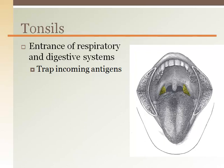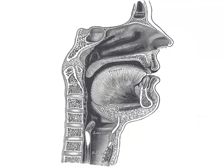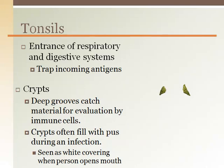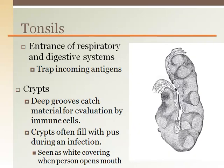The tonsils are clusters of lymphatic tissue found at the entrance of the respiratory and digestive systems — the nose and mouth. Their purpose is to trap, identify, and destroy any incoming antigens. There are three pairs of tonsils: the pharyngeal tonsils in the back of the nasal cavity, the palatine tonsils seen in the back of the throat, and the lingual tonsils found in the posterior portion of the tongue. The tonsils have a rough surface with deep cracks called crypts. During an upper respiratory infection, these crypts can ooze pus resulting in a white coating that is visible when you open your mouth.